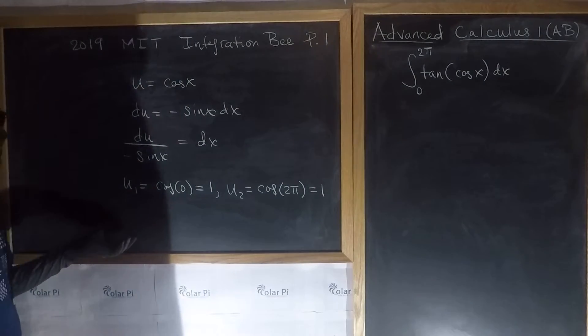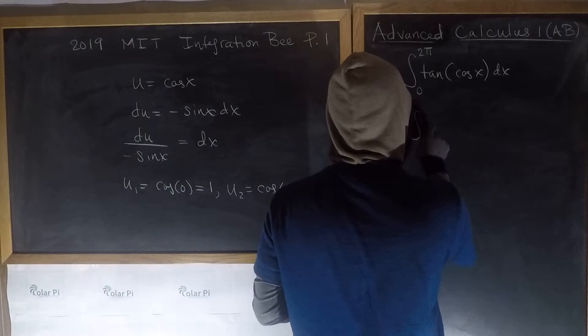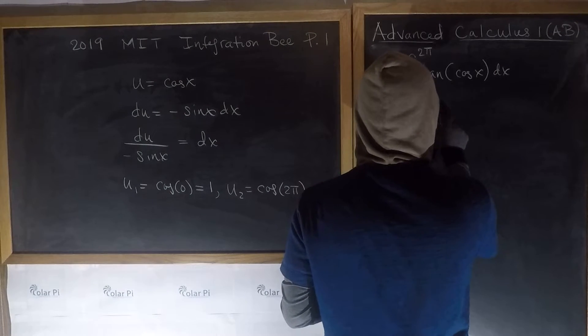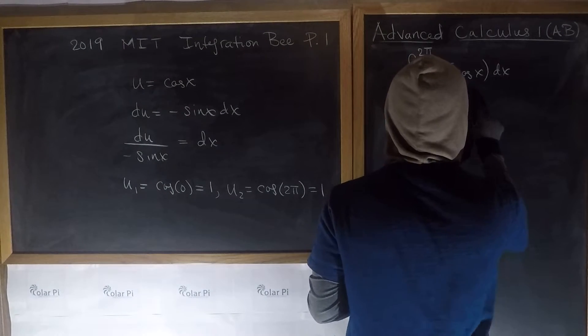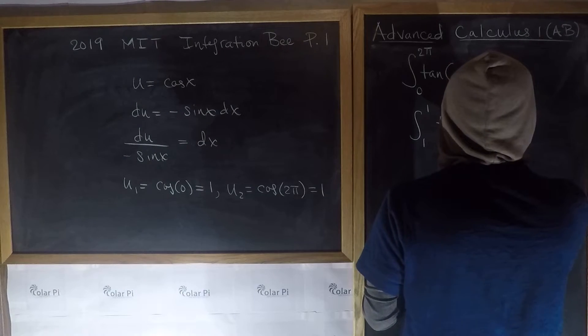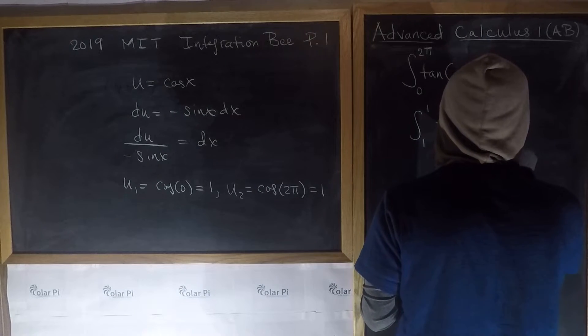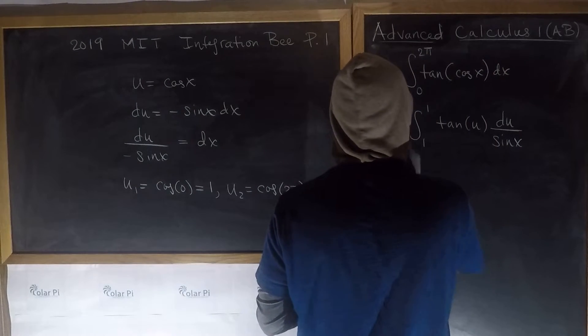So when we change from x to u, we see that this integral is going to be the integral from 1 to 1 of tan of u. And then dx is du over negative sine x, so I'll just write the sine x here and put the negative right there.